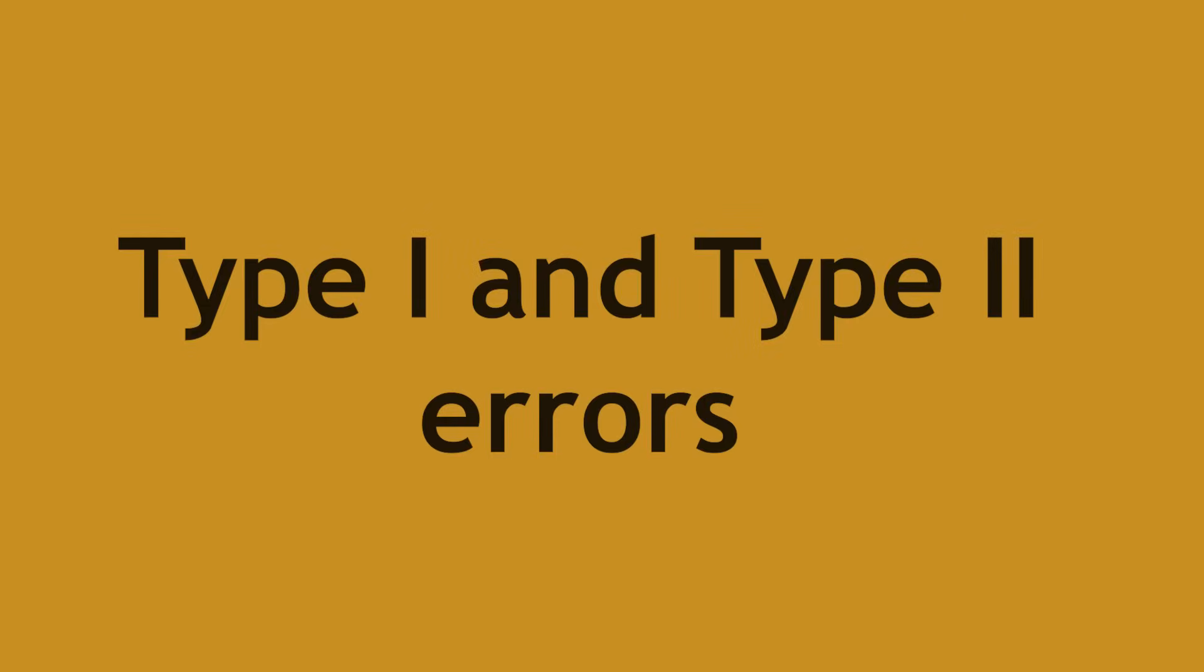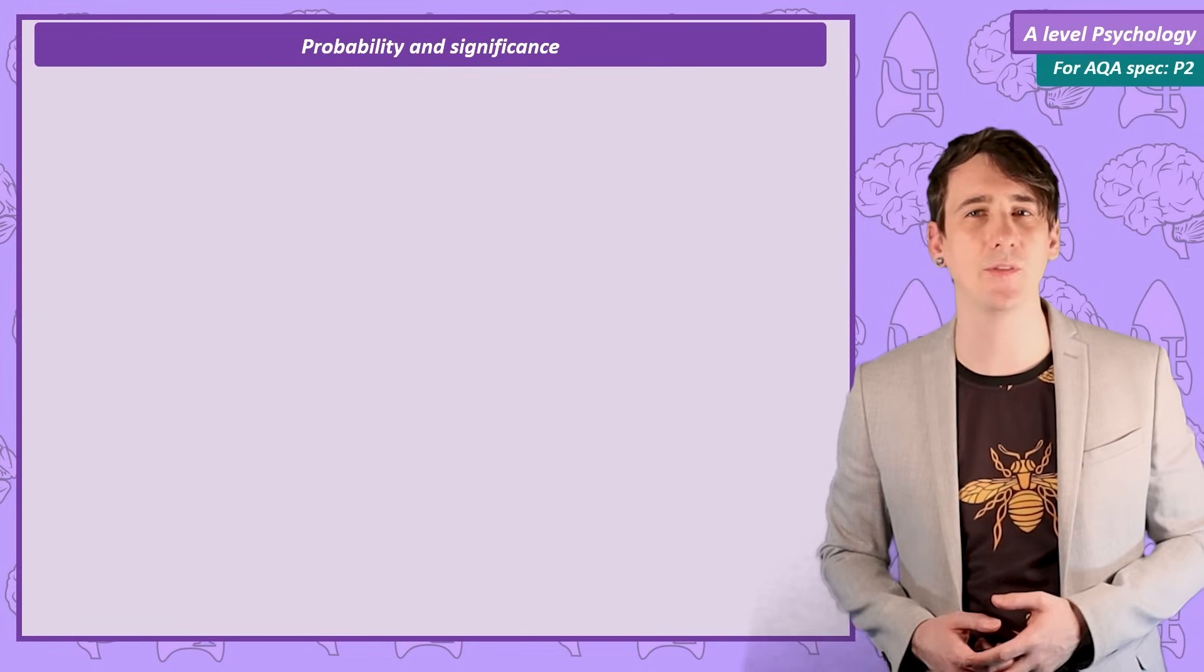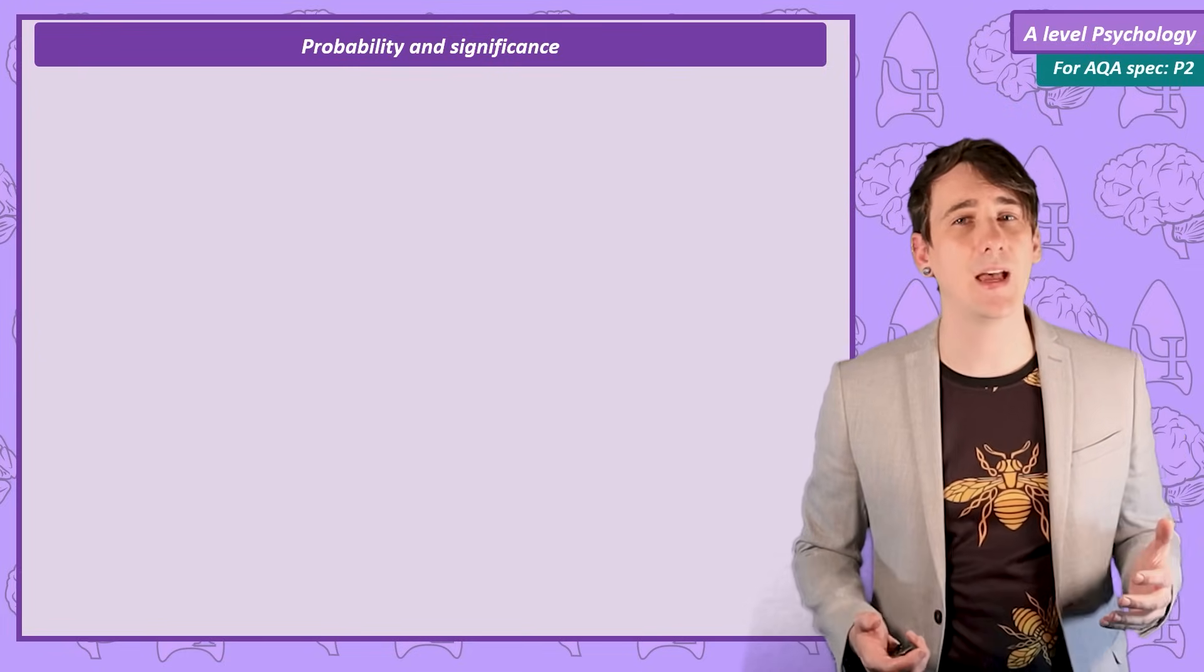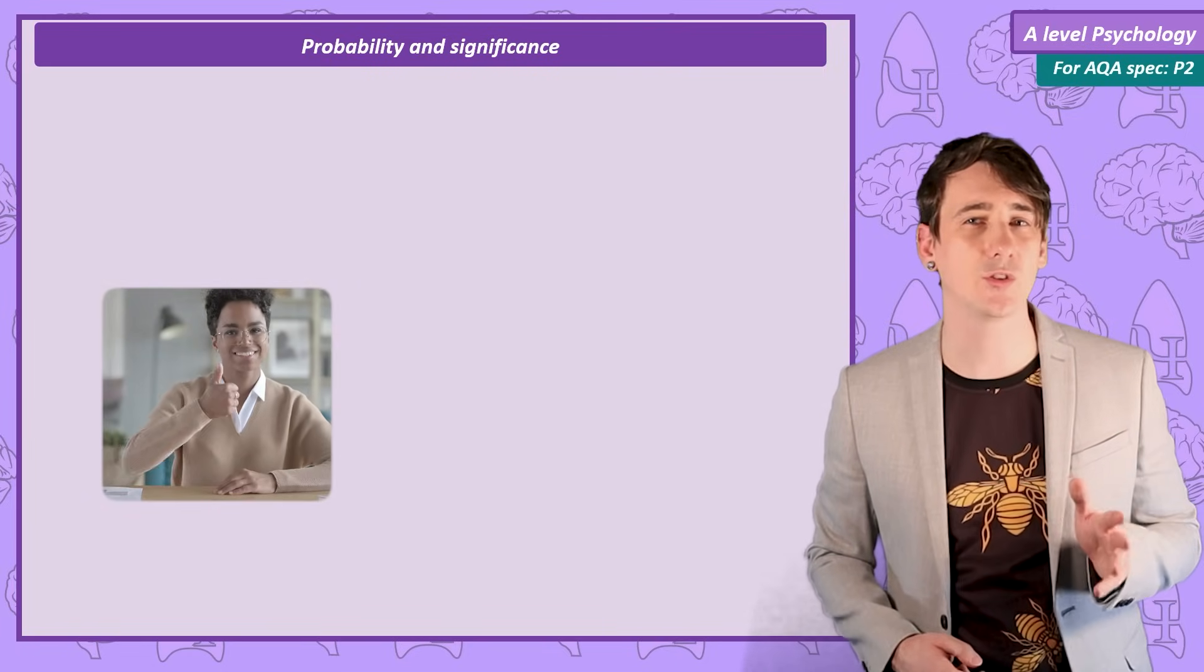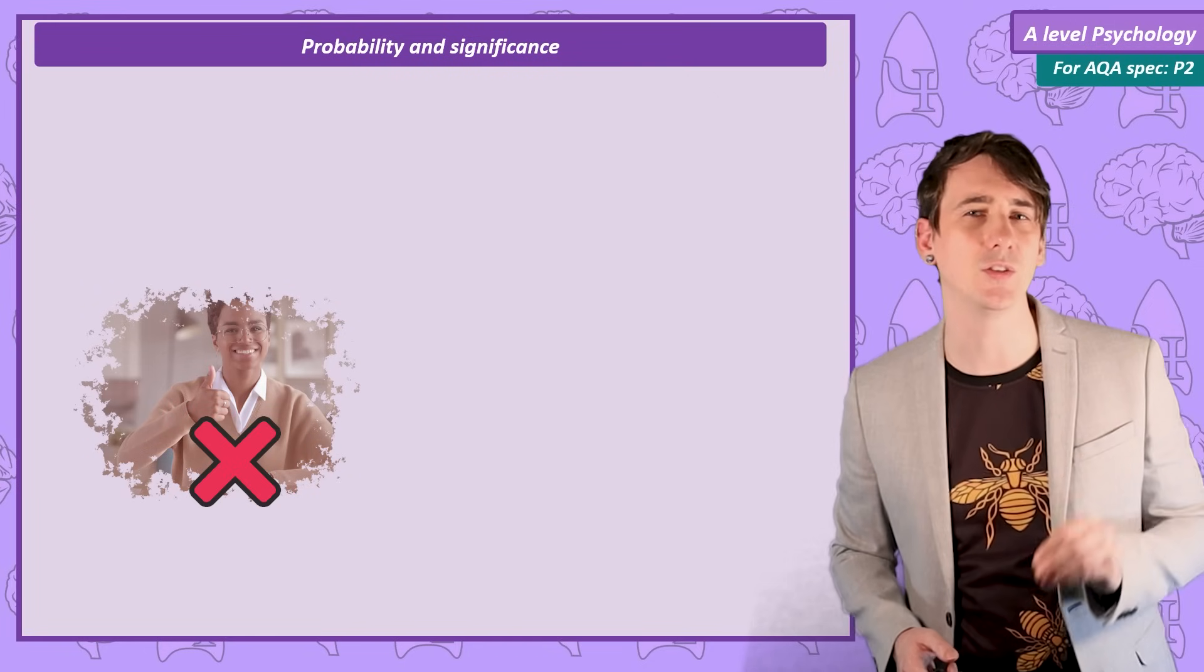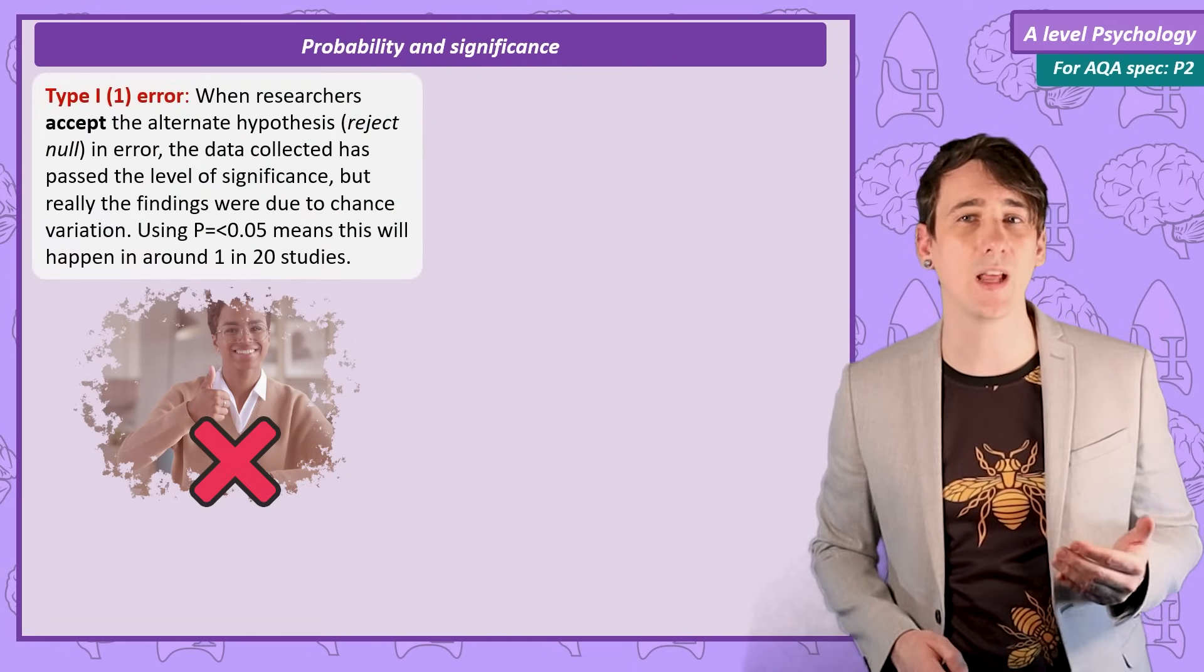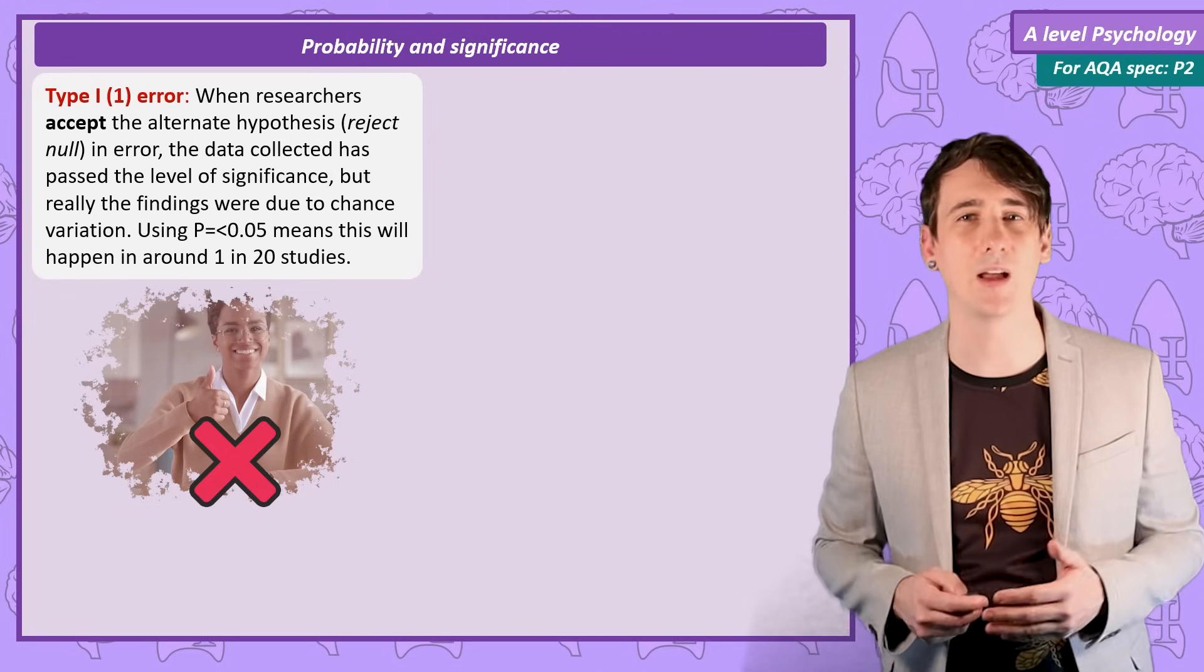Type 1 and Type 2 errors. So now you know psychologists accept or reject the alternate hypothesis on the basis of probability. And you may be able to guess what could go wrong with this. You could of course accept an alternate hypothesis as true when in reality it's not true. It just seems correct because the positive results were entirely due to chance. This is called a Type 1 error. In fact, this is going to happen 1 in 20 times on average because of the use of that 0.05 level of significance.